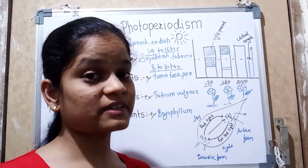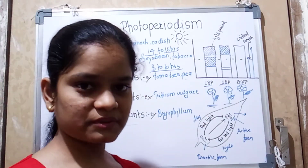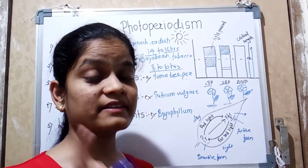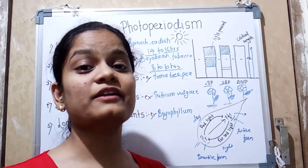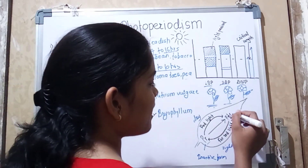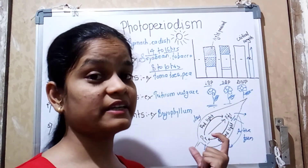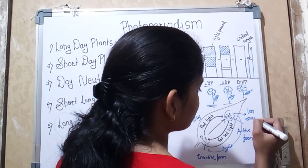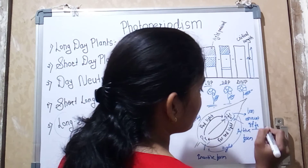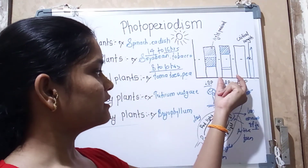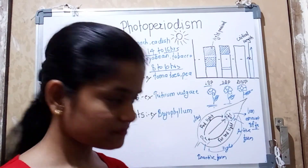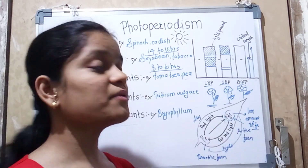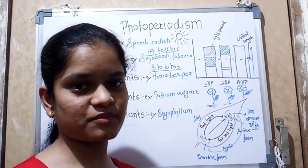In the short day plant, the day length is shorter compared to the dark or night period. During the long night, PFR is totally converted back into the inactive form PR. This results in a smaller amount of PFR remaining. This small amount of PFR is what leads to the induction of flowering in short day plants. So: a large amount of PFR induces flowering in long day plants, and a small amount of PFR induces flowering in short day plants.